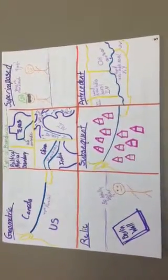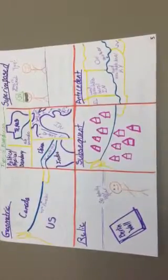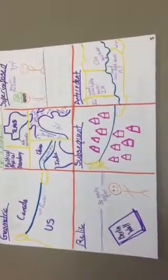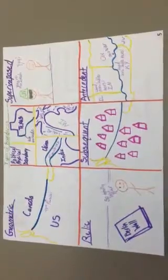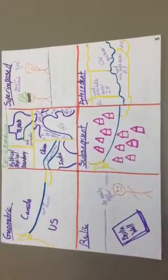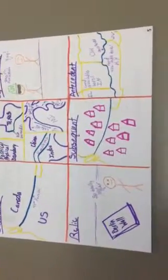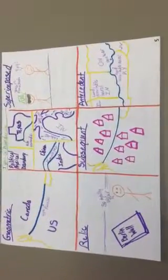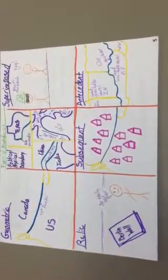The different types of boundaries. The first is geometric, which is based on a grid system. The second is political-physical boundaries, based on tangible boundaries present in nature. Superimposed boundaries are put in place by usually another government or higher power. Relic boundaries are boundaries that once existed historically and no longer exist. Subsequent boundaries were put in place after a significant settlement. And antecedent boundaries were put in place before a significant settlement.